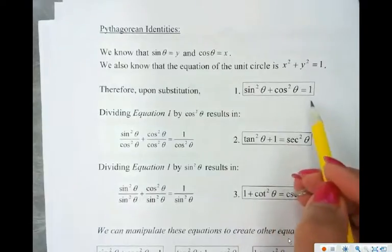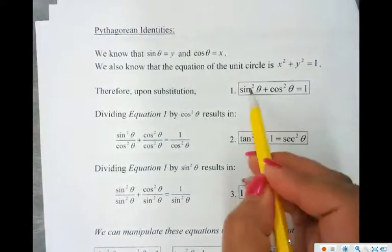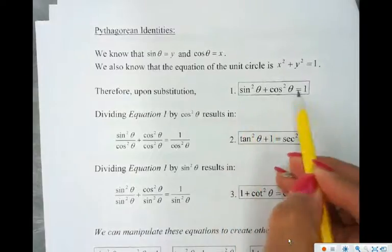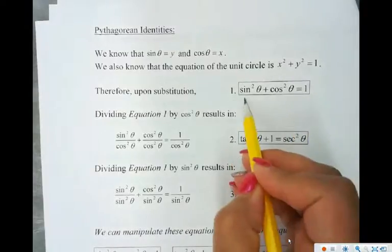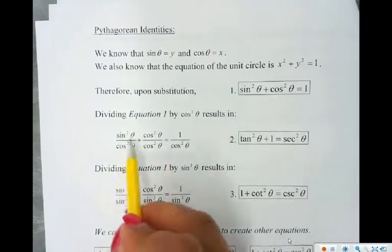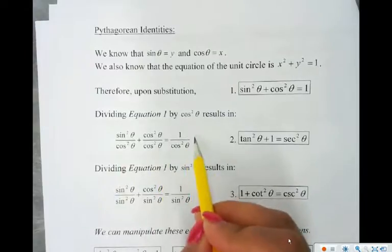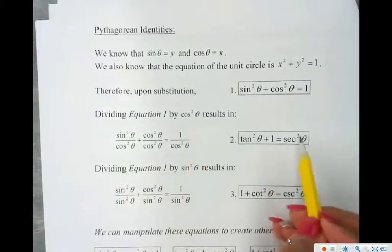So this is one identity that you need to know. If I were to take this equation and then divide each term by cos squared, I end up with this. When I simplify this, this is equal to tan squared, this is equal to 1, and then this is 1 over cos squared which is secant. So then I get this identity.